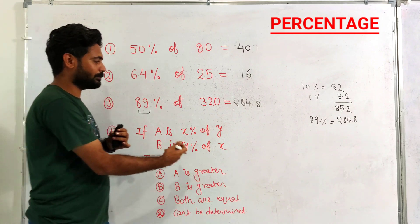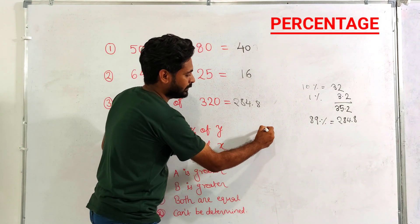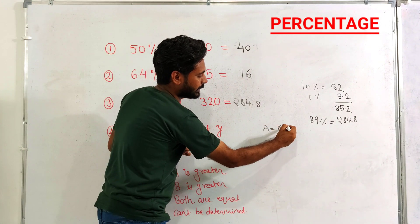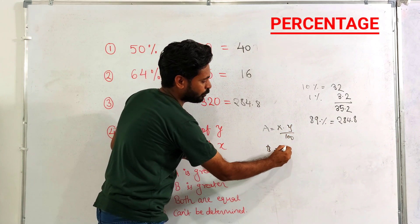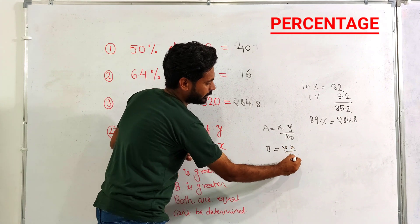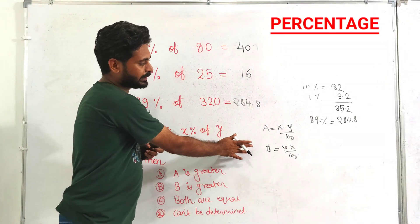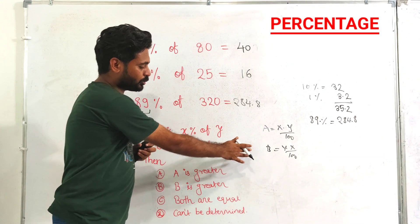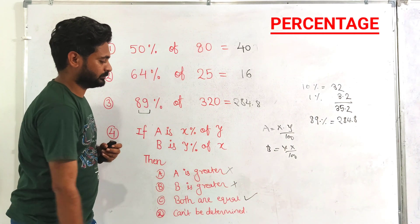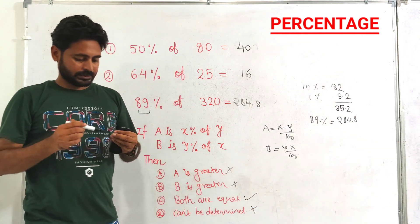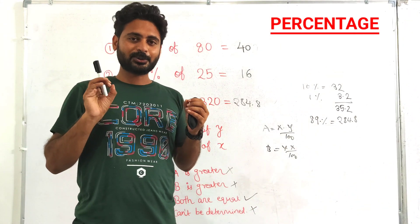If you elaborate, A is x into y by hundred and B is y into x by hundred. Clearly from here, A and B both are equal. So this is wrong, this is wrong, both are equal is correct, and obviously this is wrong. I hope you understood this.